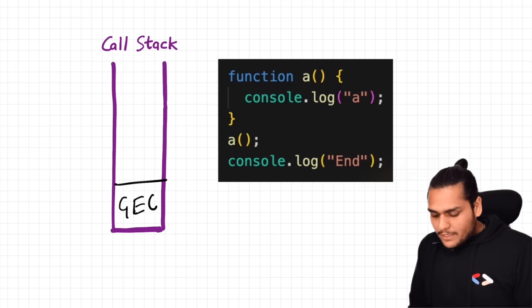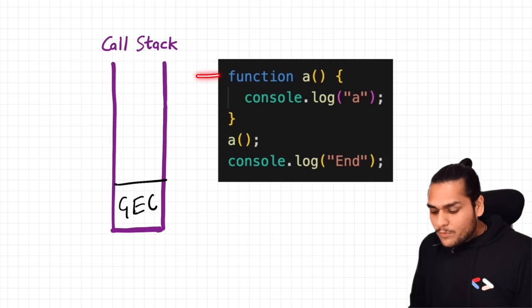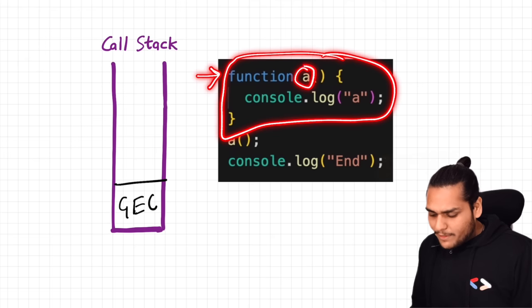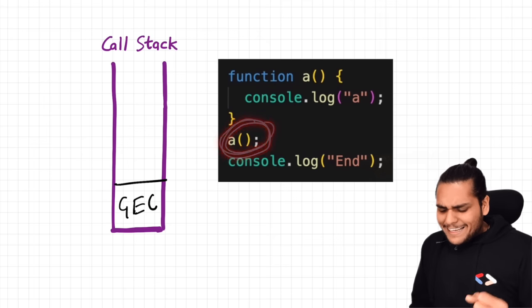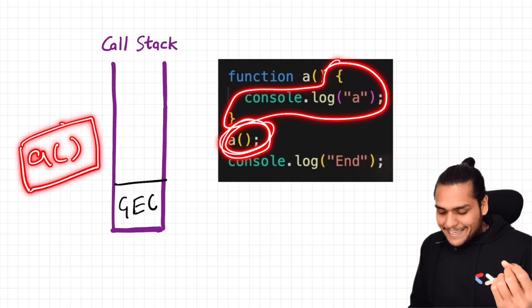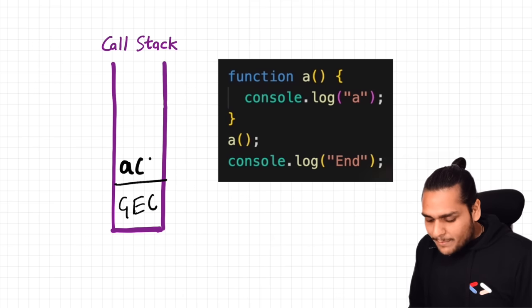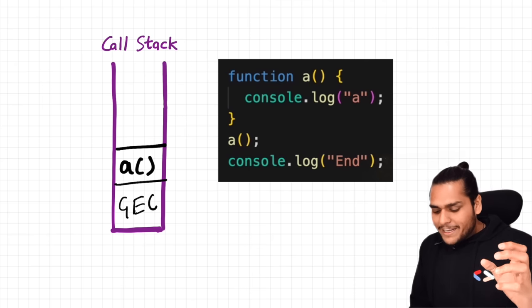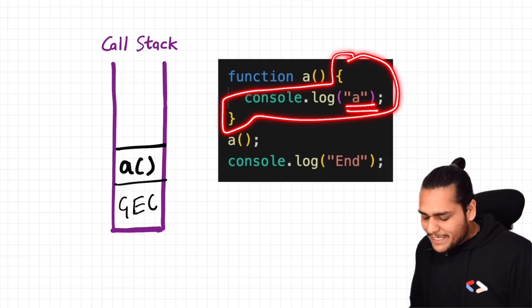Now in the global execution context, this whole code will run line by line. As we move on to the first line, this is the function definition of a, so a will be allocated memory and this function will be stored. Now comes the most exciting part — this is the function invocation. In case of a function invocation, an execution context is created for function a, and this execution context is again pushed inside the call stack. The code of function a will be executed line by line, which means it will print 'a' into the console.